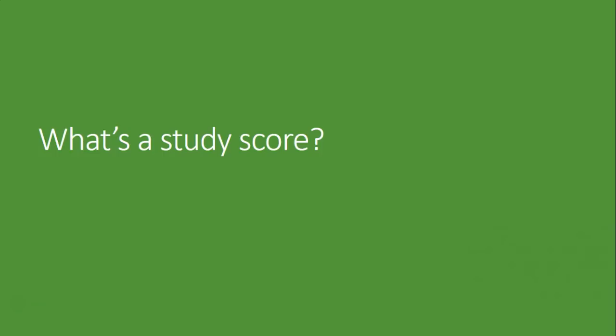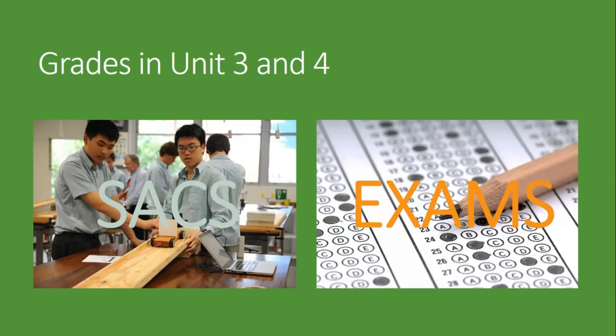Now we're going to look at unit 3 and 4. The way they're scored is a little bit different. You really do get a score from the central body, from the VCAA, and that score is called a study score for each subject. There are two types of assessments in units 3 and 4: there are SACs and there are your exams.